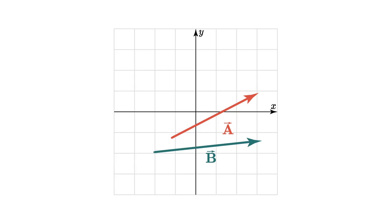I want a minus b. So I first multiply b by minus 1 to find minus b. And then I move the tail of minus b to the head of a, and add the two like this.